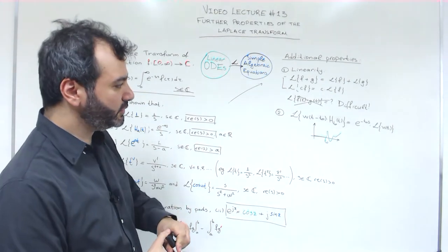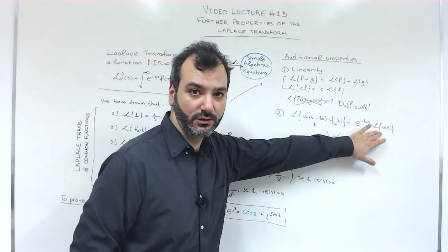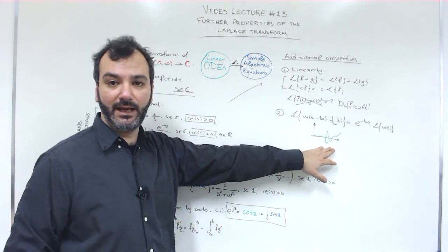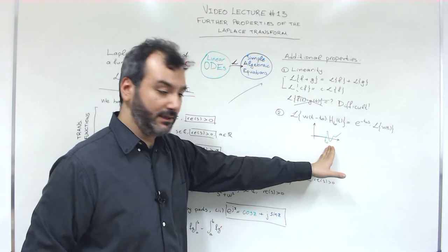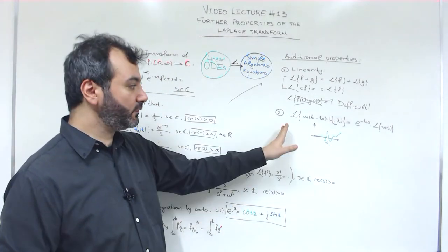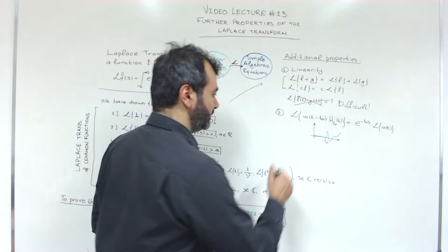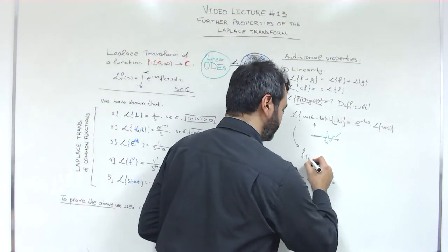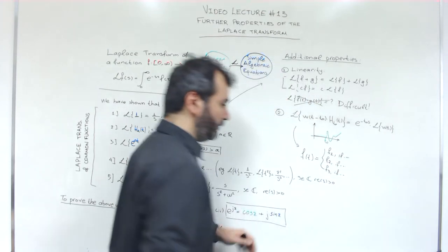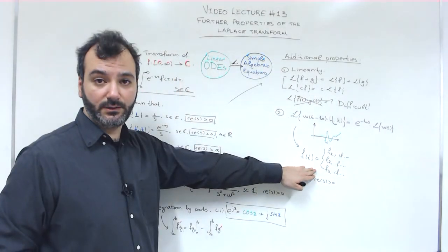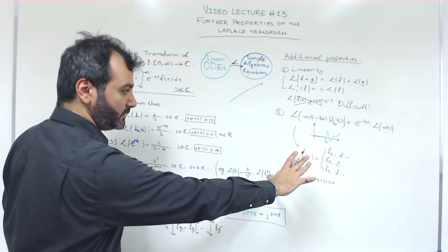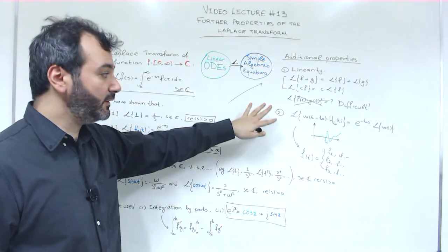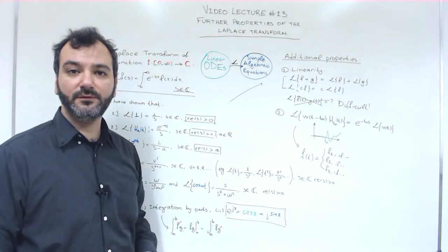Then we introduced the property from the last lecture that we can use to find the Laplace transform of delayed functions that start at t₀ and are zero before that. And of course, we can use that to determine the Laplace transform of functions defined piecewise. So that is what we've done so far. Now we will go through a few further properties of the Laplace transform, which are very useful.